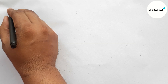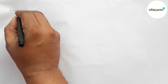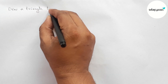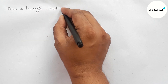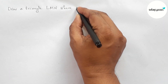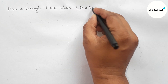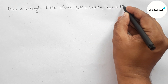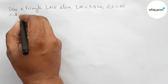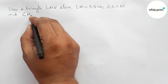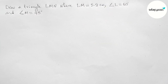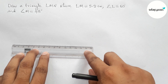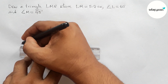Hi everyone, welcome to Essay Share Classes. Today in this video, we will draw a triangle LMN where LM equals 5.2 centimeters, angle L equals 60 degrees, and angle M equals 45 degrees, in an easy way. Please watch the video till the end. Let's start.